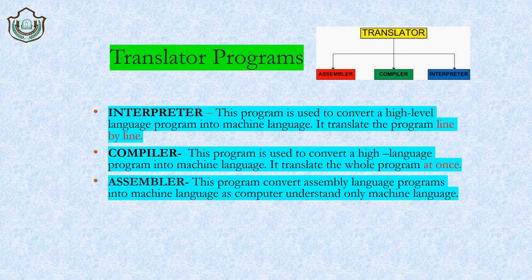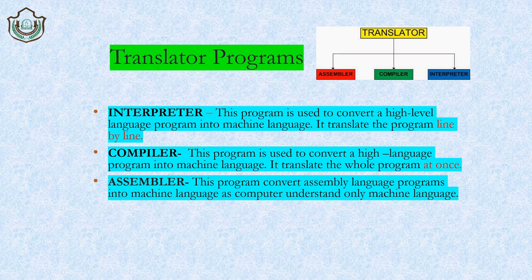The solution is translator programs. We have already understood the assembler. Two new translator programs are used for high level language: the interpreter and the compiler. Both are translator programs used for high level language programs. The interpreter is a type of translator that converts high level language programs into machine language, but it does so line by line.